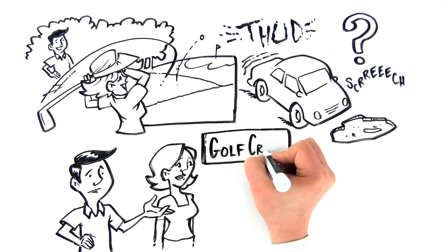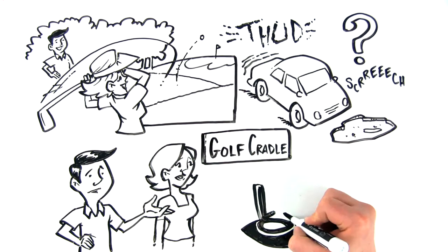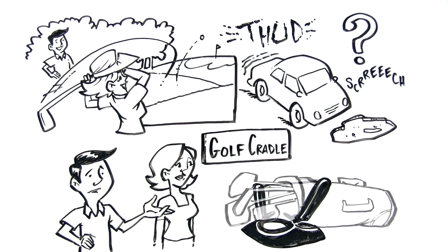It's called the golf cradle. It holds our clubs in place so they don't bounce around. You just put the bag here and strap it tight. Ta-da!